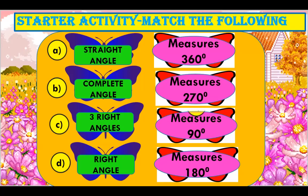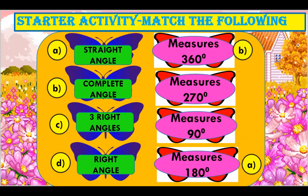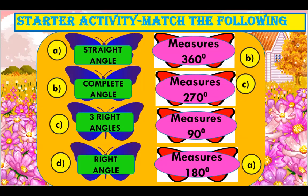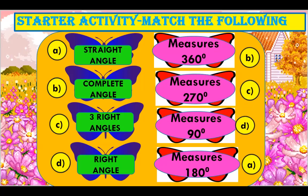Let's check. Straight angle measures 180 degrees. Complete angle measures 360 degrees. Three right angles measures 270 degrees. And a right angle measures 90 degrees.